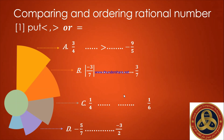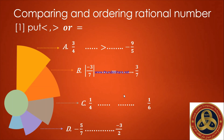Letter B: the absolute value of negative three over seven, and on the right three over seven. The absolute value ignores the negative sign, so it becomes three over seven. Both sides are three over seven, so the answer is equal. Letter C: one over four compared to one over six. Since the numerators are the same and four is a smaller denominator, one over four is greater than one over six.